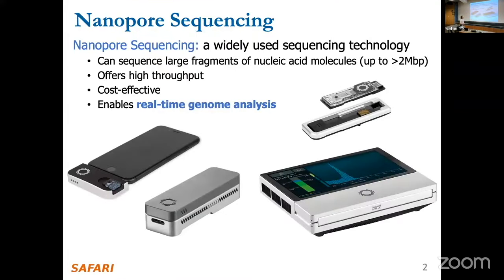Let me start with some background. This goes in the same direction as the RawHash work that John presented recently, and I'm using some of John's background slides here. So recall these nanopore sequencers — they're tiny, mobile devices, and one interesting feature is that they enable real-time analysis of the data.